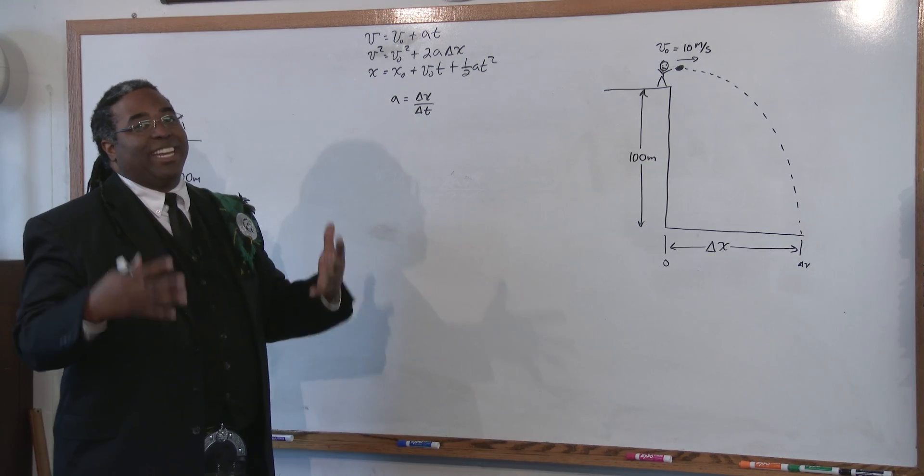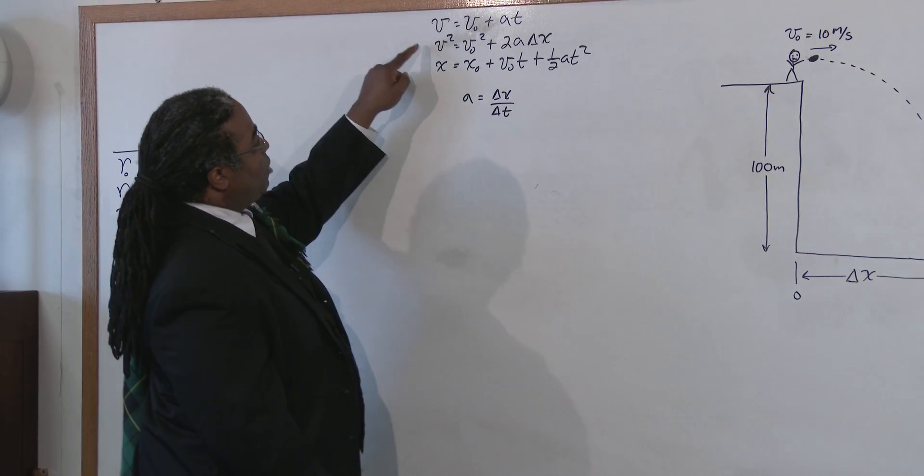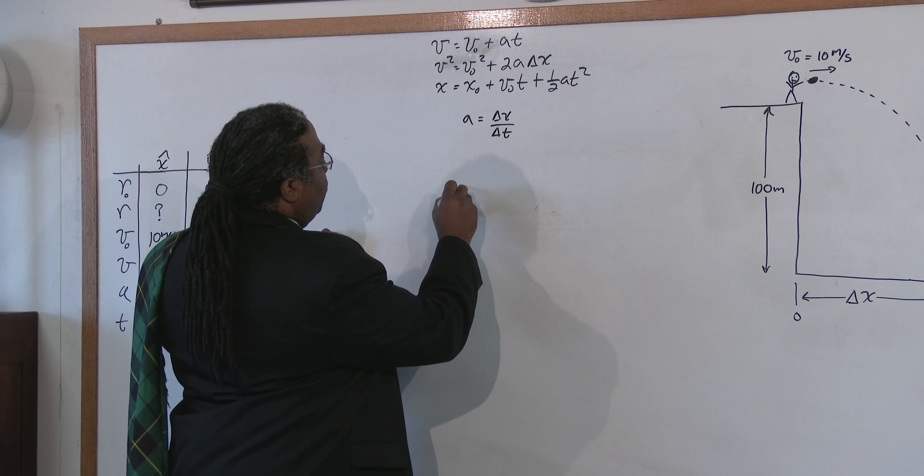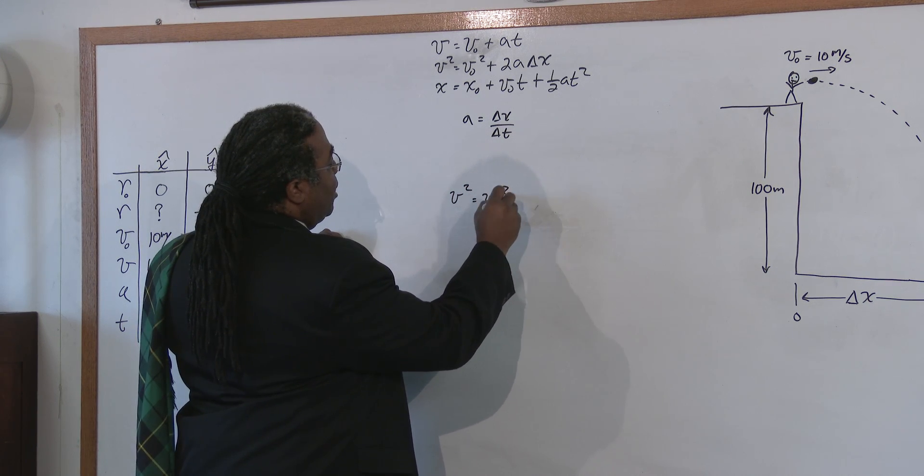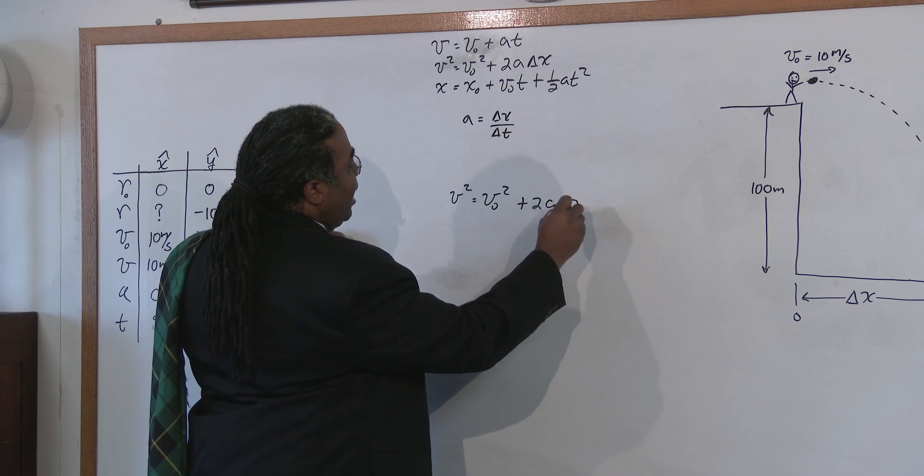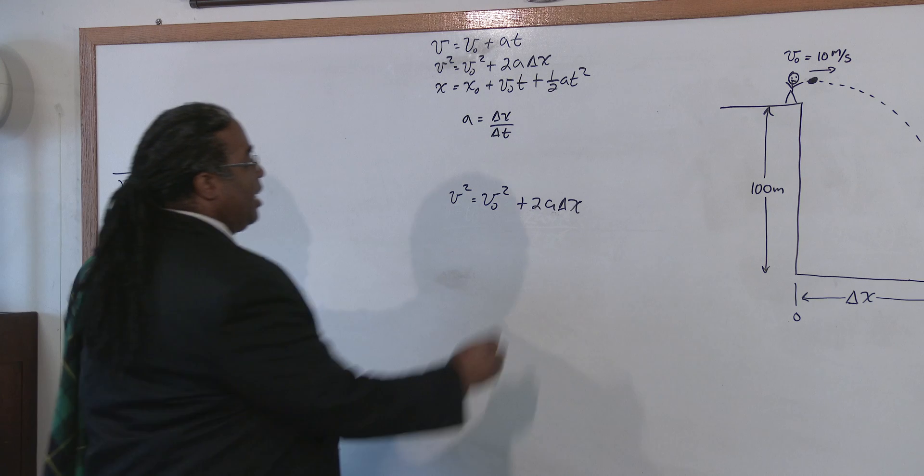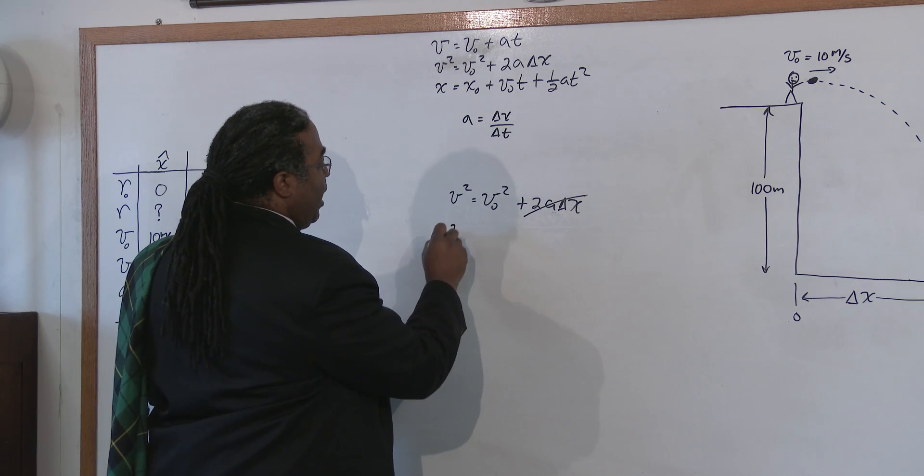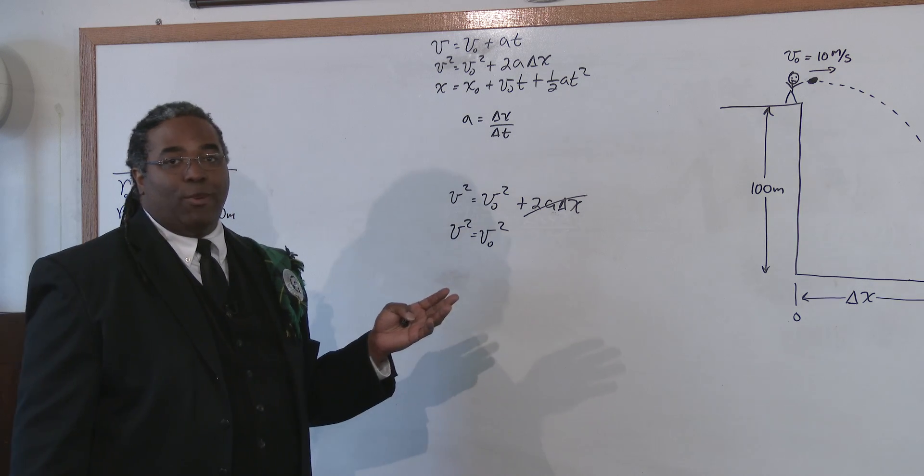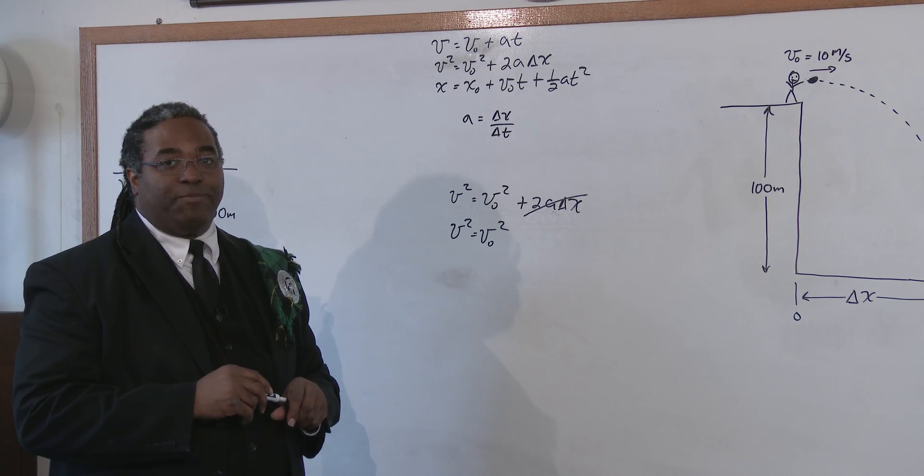Now, let me very quickly show you why you cannot use the x-axis to solve the problem. Let's just say that we use our second equation to solve for the x. So v squared equals v naught squared plus 2a delta x. What was our acceleration in the x? It's zero. Therefore, this term goes away and you have v squared is equal to v squared. Well we already knew that. We don't learn anything from that. So that shows you that you can't use the x direction.